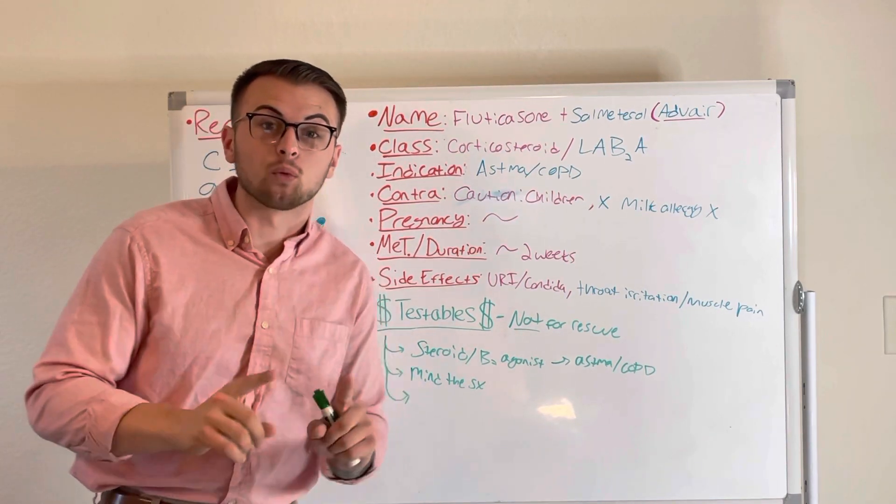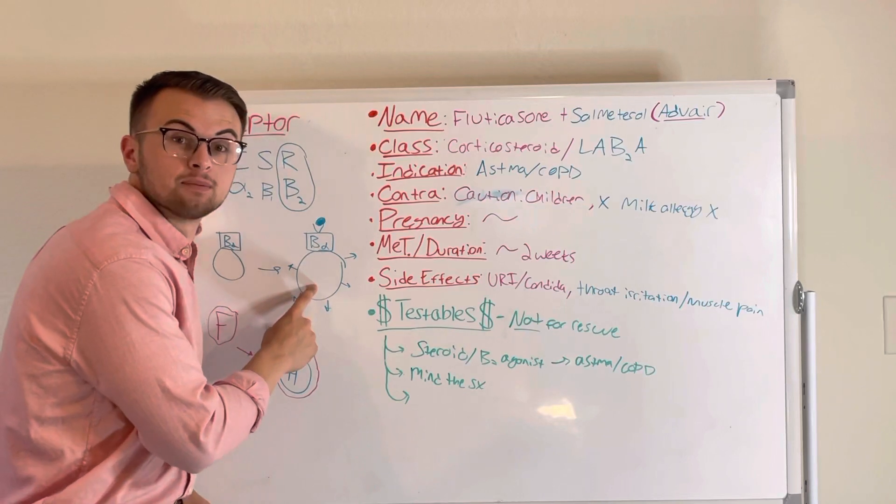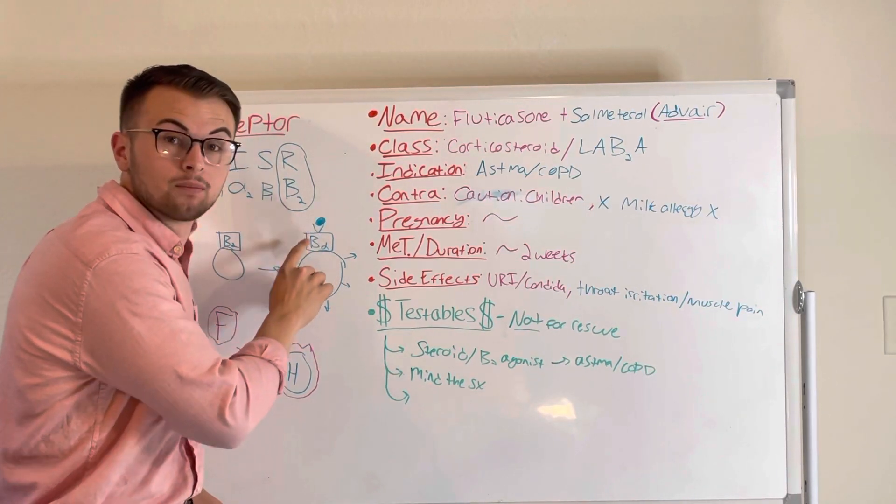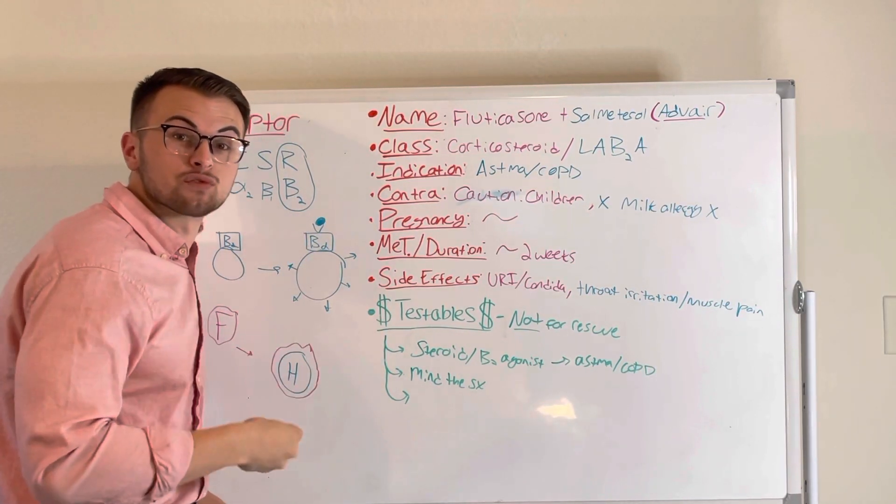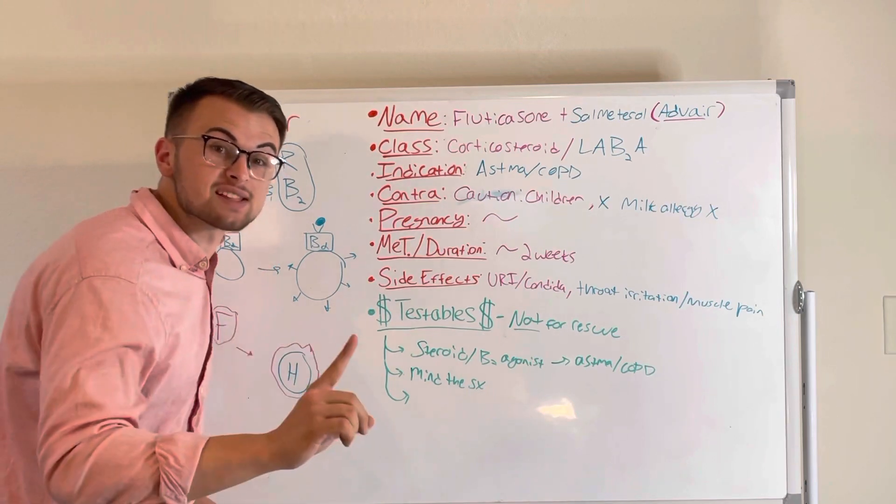The end result is that our airways become more dilated directly from the salmeterol, and constriction from inflammation is prevented by the fluticasone.